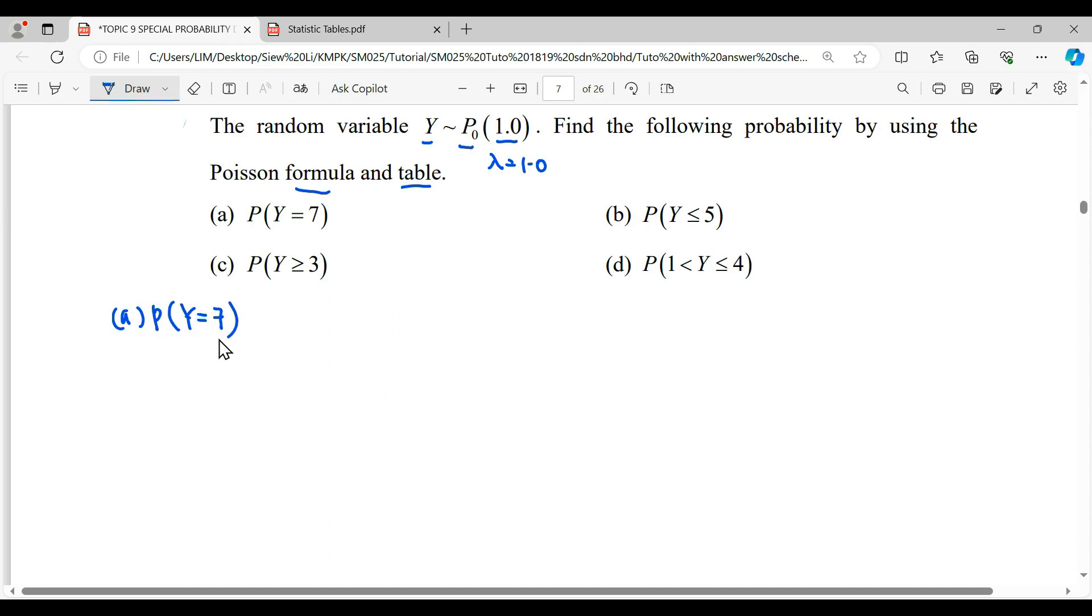For part (a), finding the probability that Y equals 7, we can use the formula directly: e to the power of negative lambda, lambda to the power of 7, over 7 factorial. We can use a calculator to get this.